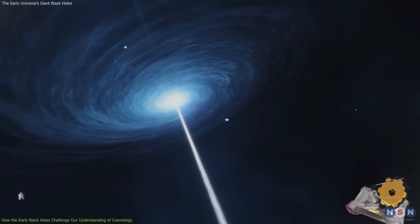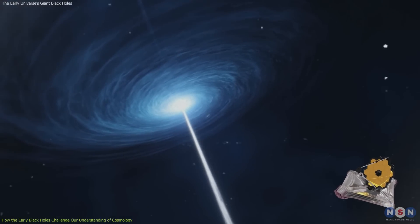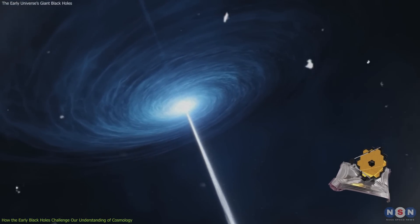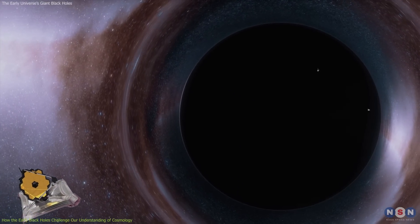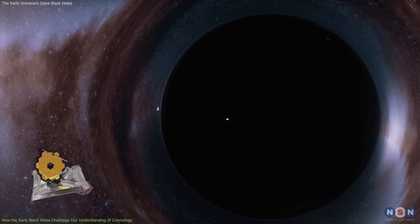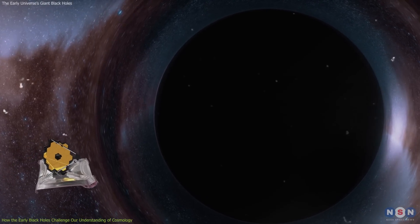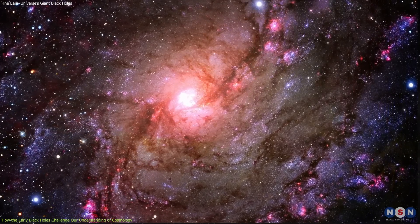Webb could also measure their environments, such as the gas density, metallicity, and radiation field around them, which could affect their growth rate and feedback effects. By studying these intermediate-mass black holes, James Webb could help us understand how they became supermassive ones later on. Webb could also help us understand how they influenced their host galaxies and vice versa.